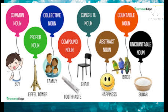Eiffel Tower — it's a specific name of a place, so it will come under proper noun. Collective noun — a group of things. Example: family. Next, compound noun — for example, toothpaste. That is a compound noun.